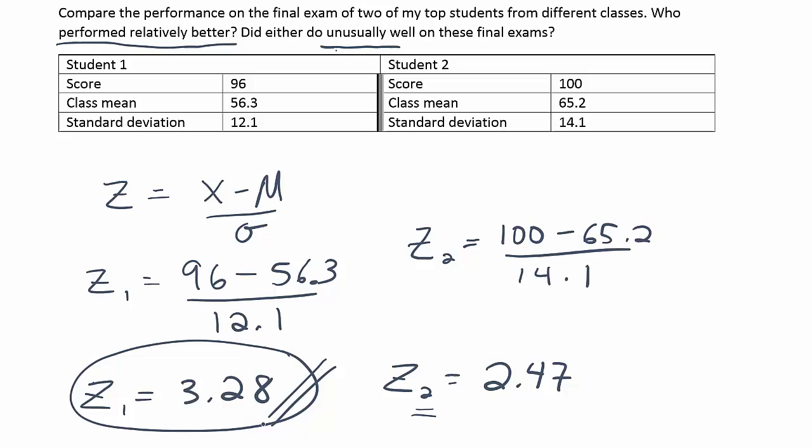Now to the question of did either student do unusually well on these final exams. If we use two and negative two as the cutoffs for unusualness, in other words, if you're below negative two, then you did unusually poor. If your z-score is above positive two, then you did unusually well. Because on a test, remember, high numbers mean good grades. So in this case, since both these scores are above the 2.0 cutoff for where we start to say things are unusual, we'd say they both did unusually well.